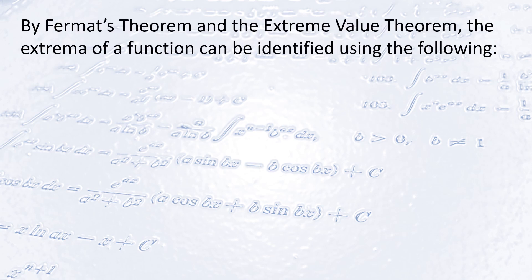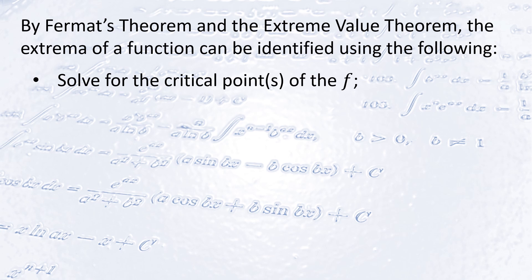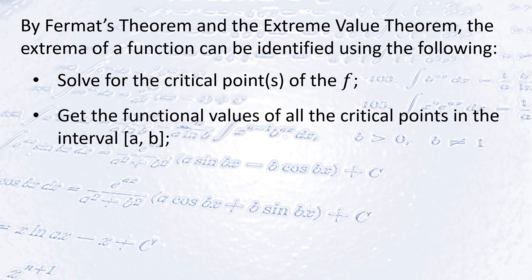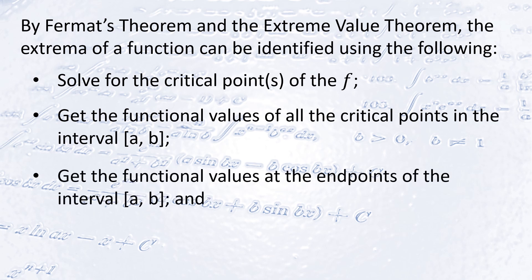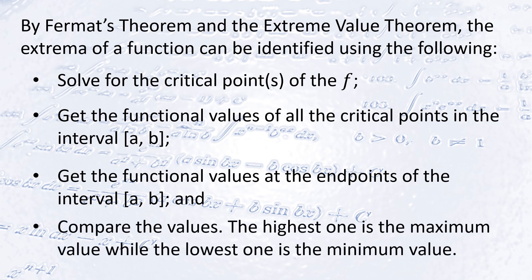By Fermat's theorem and the Extreme Value Theorem, the extrema of a function can be identified as follows: first, solve for the critical points of f using the definitions and the two theorems. Then get the functional values at all critical points in [a, b]. Get the functional values at the endpoints of [a, b] and compare the values. The highest is the maximum value and the lowest is the minimum value.